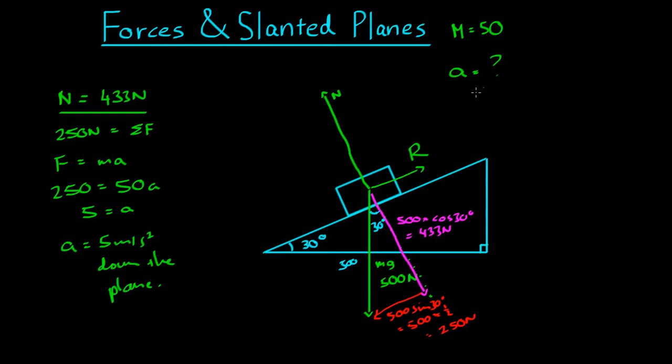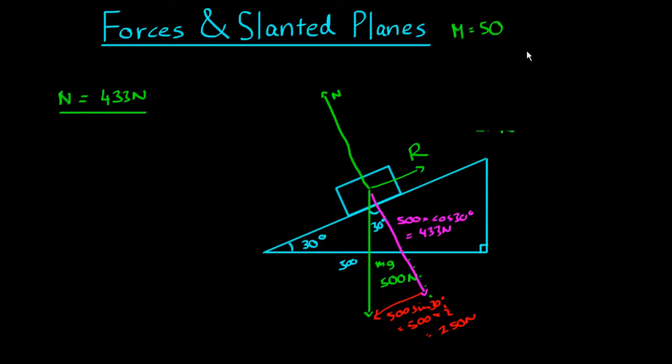And finally, we can make the problem even more difficult. Let's say the normal is always going to be 433. If the block were accelerating down the slant at 1 meter per second squared, what is the frictional force?